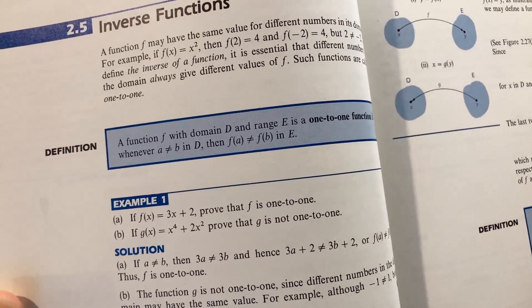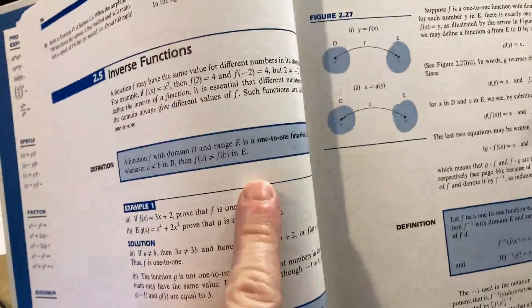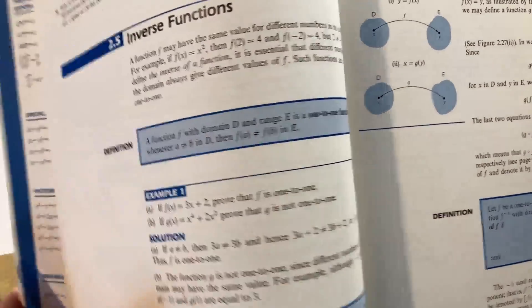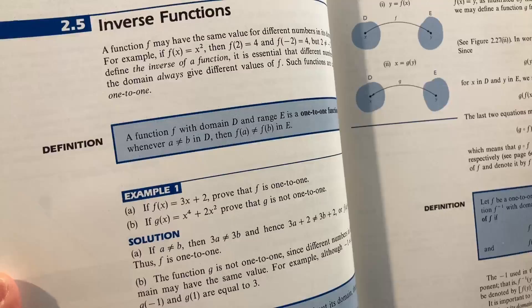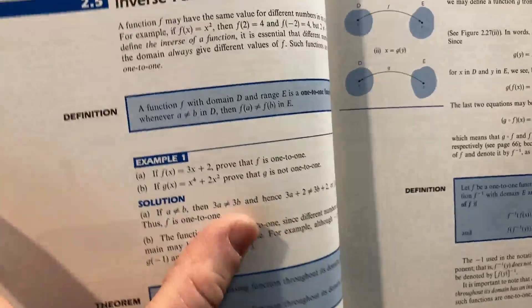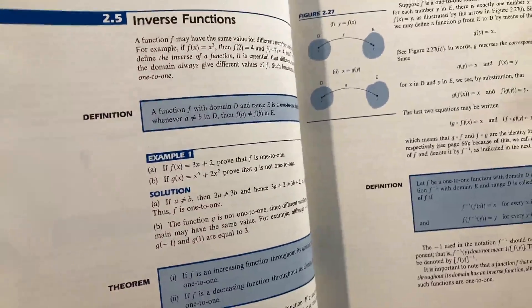And you can state that, you can state it differently too. You can say that if f of a is equal to f of b, then a is equal to b. That would be the contrapositive of that definition. But sometimes stated that way too.